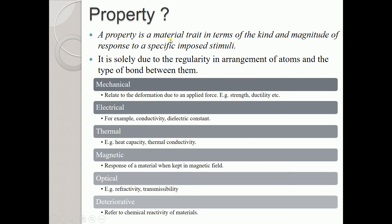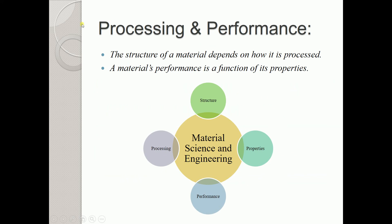To summarize, a property is a material trait in terms of the kind and magnitude of response to a specific imposed stimuli, arising from the regularity in atomic arrangement and bonding type. We have six types: mechanical, electrical, thermal, magnetic, optical, and deteriorative. Regarding processing: the structure of a material depends on how it is processed, so processing is directly linked to the structure of the material.